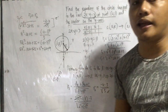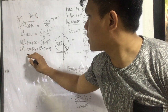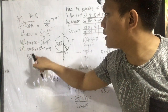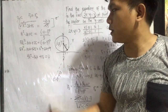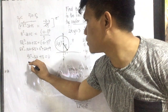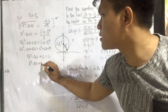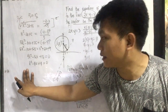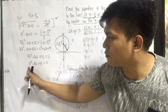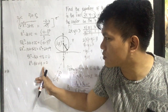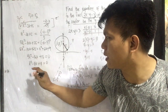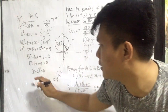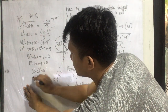Combining like terms: 5k² minus k² is 4k²; negative 10k minus 6k is negative 16k; 25 minus 9 is positive 16, giving us 4k² minus 16k plus 16 equals 0. Dividing by 4: k² minus 4k plus 4 equals 0. This is a perfect square trinomial, so we have (k minus 2)² equals 0, giving k equals positive 2.